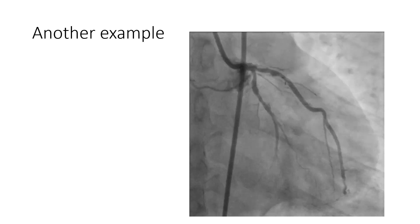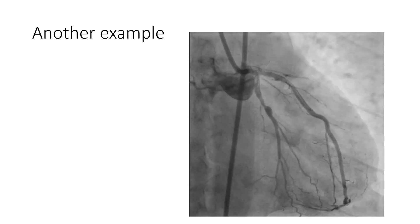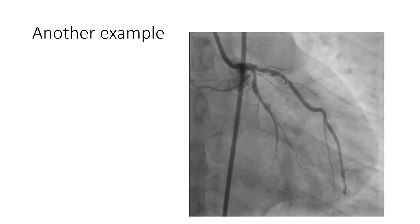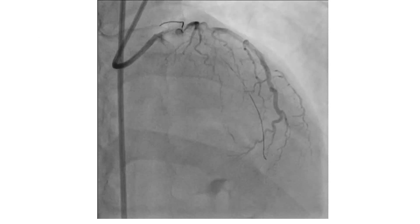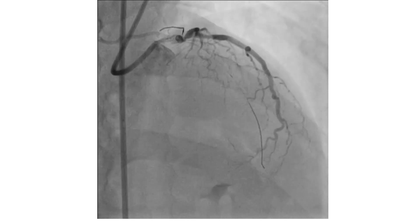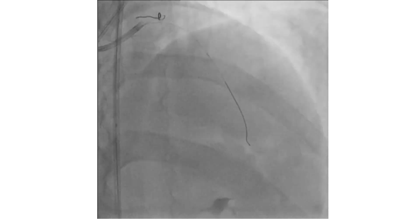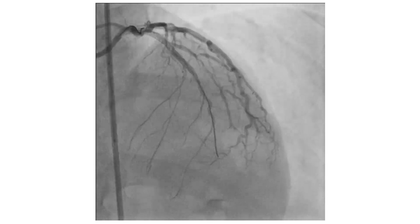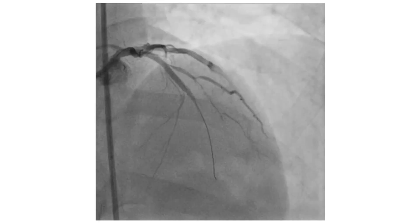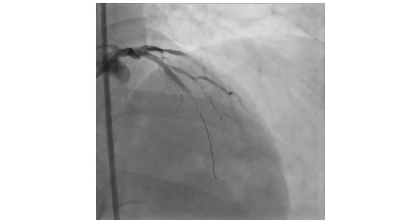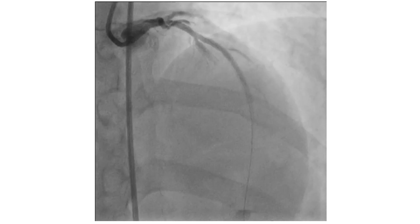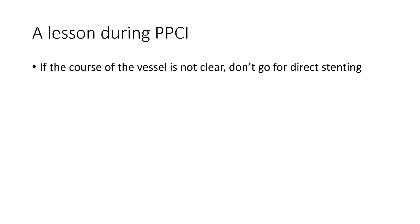In another example, there is also a total occlusion of the LAD. This is the circumflex, this is the ramus, and the LAD is totally occluded. A wire was passed into what the operator thought to be the LAD. Most operators prefer to do direct stenting during primary PCI to avoid a lot of manipulation of the plaque and thrombus. So direct stenting was done — then a surprise was seen: the stent this time was in a large septal branch. Fortunately, the operator managed to wire the proper LAD and distend it. So the lesson during primary PCI is that if the course of the vessel is not clear, do not go for direct stenting.